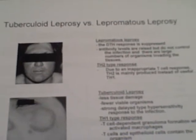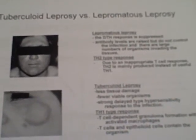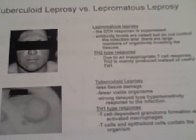Tuberculate leprosy versus lepromatous leprosy. In tuberculate leprosy, there is less tissue damage, fewer viable organisms, and a strong delayed-type hypersensitivity response to the infection. The response is characteristic of a Th1 type of response. T-cell-dependent granuloma formation with activated macrophages, T-cells, and epithelioid cells contains the organism.